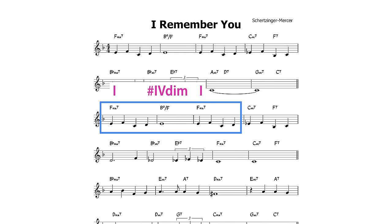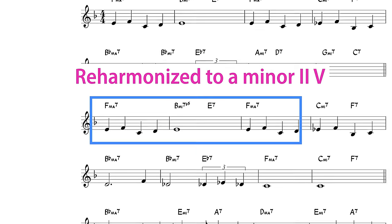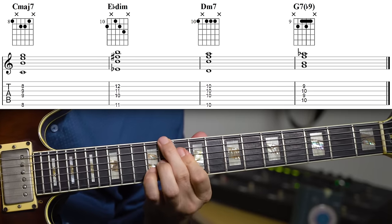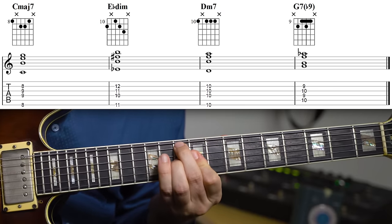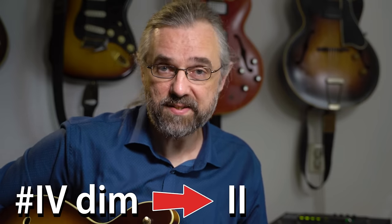Very often the sharp-four diminished is also reharmonized as a two-five, usually a minor two-five from the sharp four. Another very common variation is what we refer to as the flat-three diminished that resolves back to a two chord. This is in fact an example of a sharp-four diminished chord resolving back to a subdominant chord — in this case it's an inversion, so it's the flat-three resolving back to the two chord, but it is the same kind of sound.